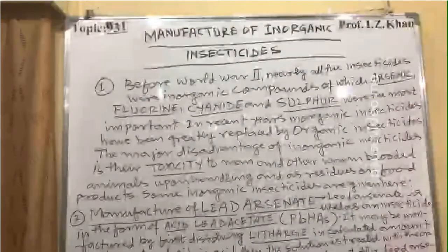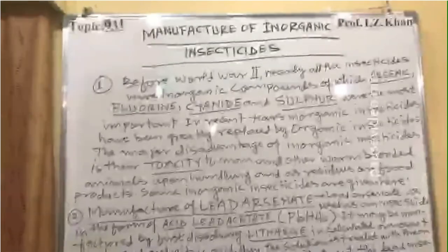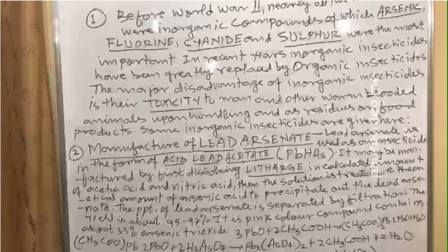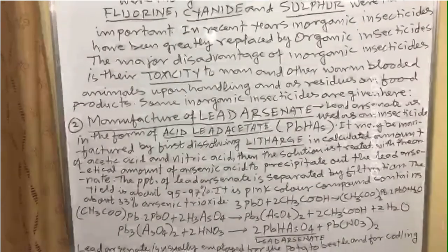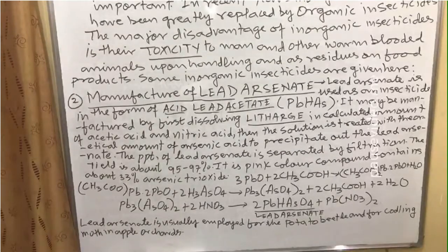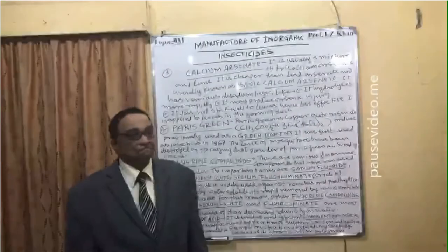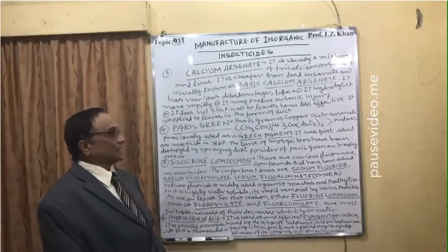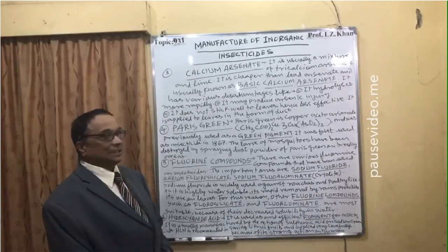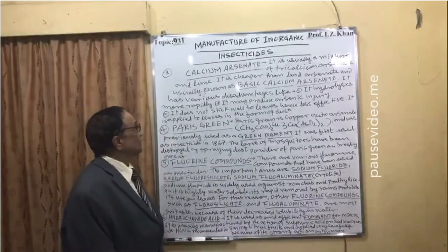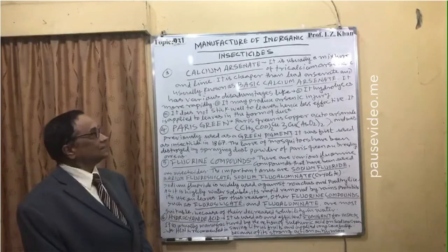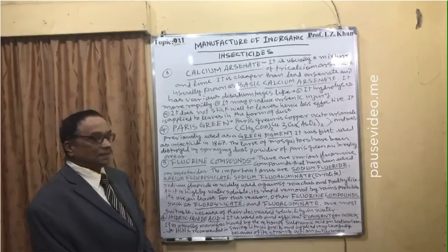Lead arsenate is usually employed against the potato beetle and for codling moth in apple orchards. Number three: calcium arsenate. Calcium arsenate is usually a mixture of tricalcium arsenate and lime. It is cheaper than lead arsenate and is commonly known as basic calcium arsenate.